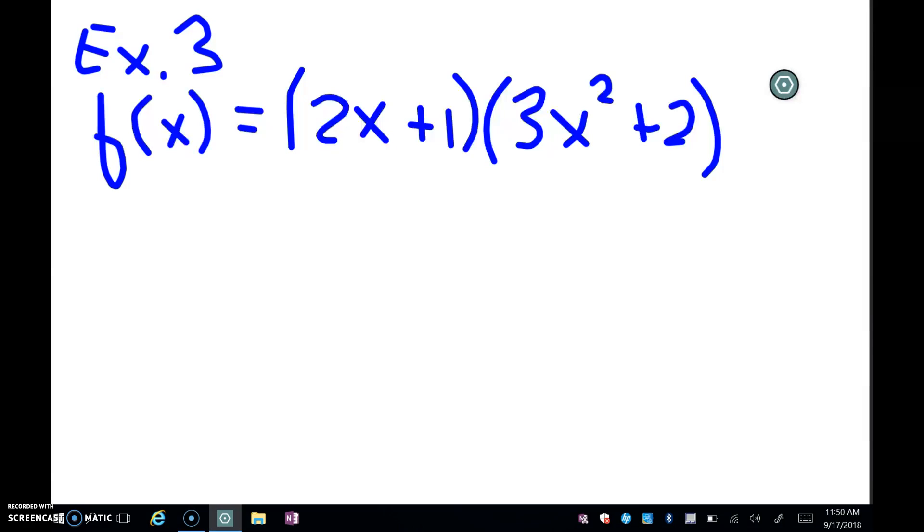This problem is not in the correct form either, because you have to have everything multiplied out to be able to apply the sum and difference rules. So we'll need to foil this out. So if I foil this out, 2x times 3x^2 is 6x^3.